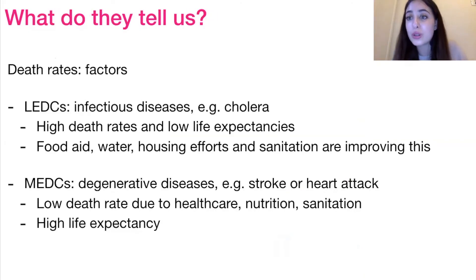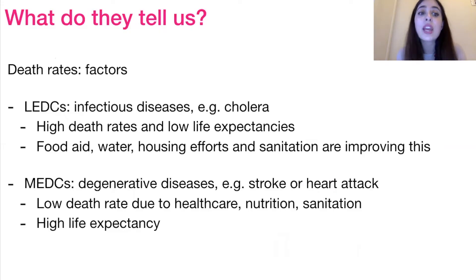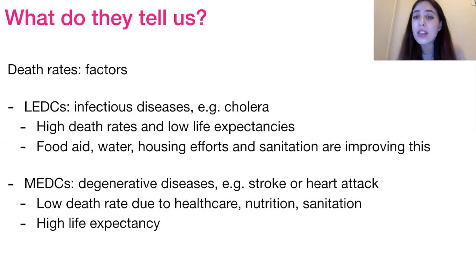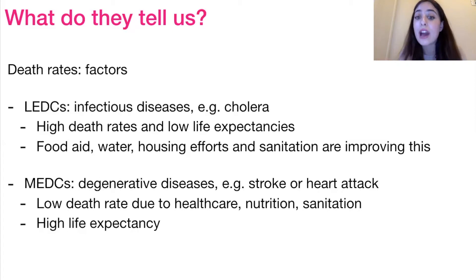What do death rates tell us? LADCs typically have higher death rates, mainly due to infectious diseases like cholera, with poor access to water, housing, and sanitation resulting in low life expectancies. With improvement in these areas, death rates can decrease and life expectancy improve. In MEDCs, deaths are more due to degenerative diseases like strokes, cancer, or heart attack, but MEDCs have a low death rate overall due to high-quality healthcare, nutrition, and sanitation — so life expectancy is typically higher.